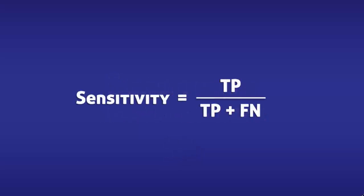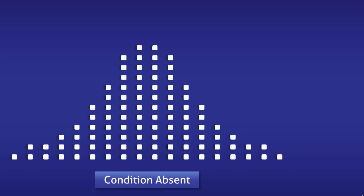Sensitivity is calculated by dividing the number of true positives by the total number of people with the condition. To help us understand this equation, we are going to imagine that a group of people are being tested for a condition. These white squares represent individuals without it, and the red squares represent individuals with it.